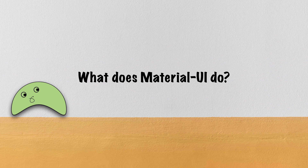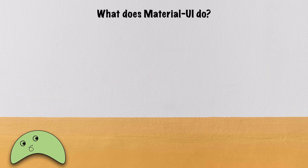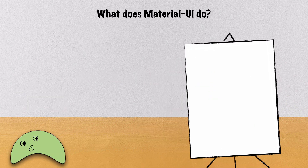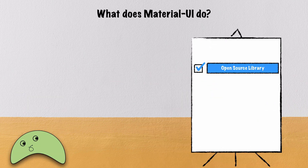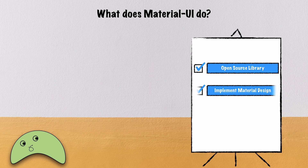The first question is: what does Material UI do? Material UI is an open source library with an MIT license that gives you an ability to implement a design system for your applications. Material UI library implements Google Material Design, which is a design system from Google. Material Design is heavily used in all Google applications that you use every day, including Maps, Calendar, Firebase site, Google Chrome site, and many others.